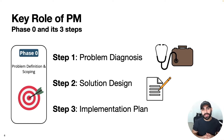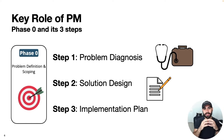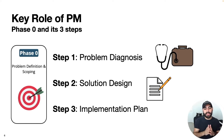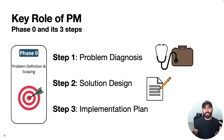Finally is the implementation plan. Once the solution has been defined, there's still the matter of what this thing's actually going to look like and how it's going to be built. Any given solution can have a wide range of potential implementations.